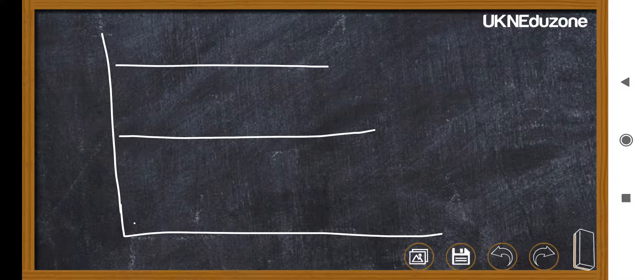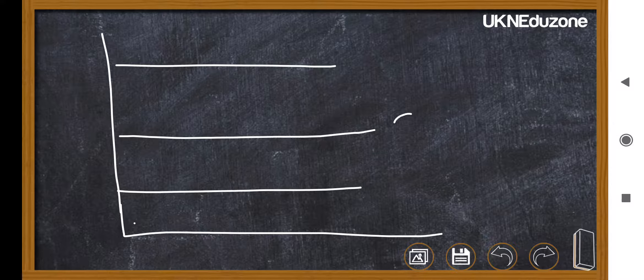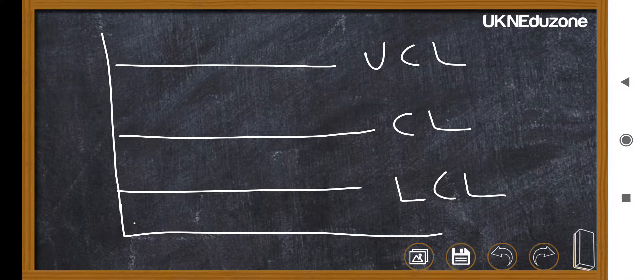This is what is known as the control chart. Here there are three horizontal lines: one is center line, upper control limit, and lower control limit. So when we plot the points in this control chart...